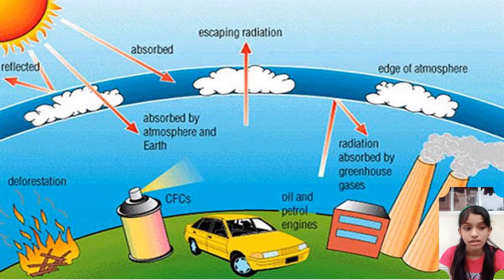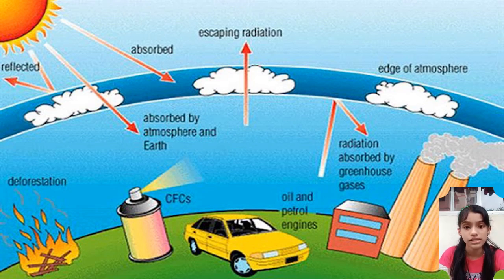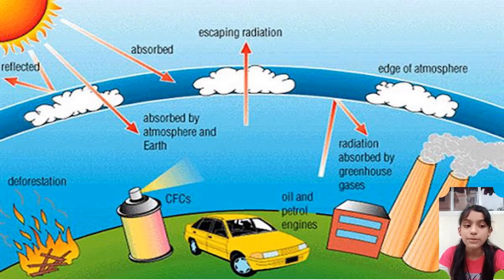The sun heats the soil and surface waters, and those rays lose much of their energy as heat. Some of that heat then radiates back out into space. However, certain gases in the atmosphere, such as carbon dioxide, methane, and water vapor, work like a blanket to retain much of that heat, helping to warm our atmosphere.